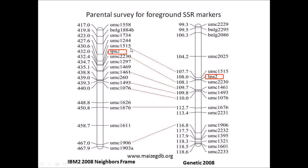A parental survey for the foreground SSR markers was conducted and it was found that the markers were distributed in the 1.05 bin location on the short arm of the first chromosome of maize. Marker UMC2230, which is closely linked to the LPA2 locus at a distance of about 0.4 cM, was selected as a foreground marker and used in screening of the F1 hybrid and backcross progenies.